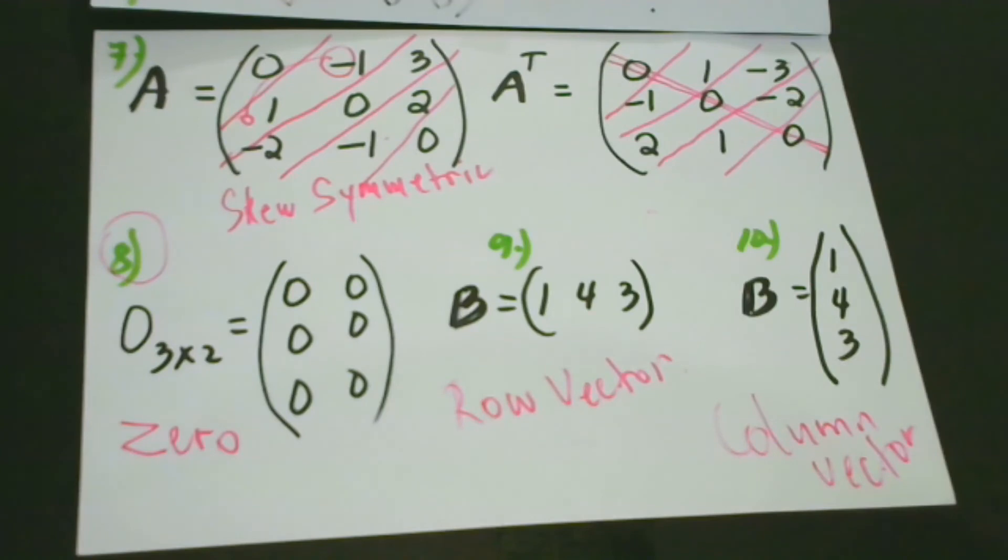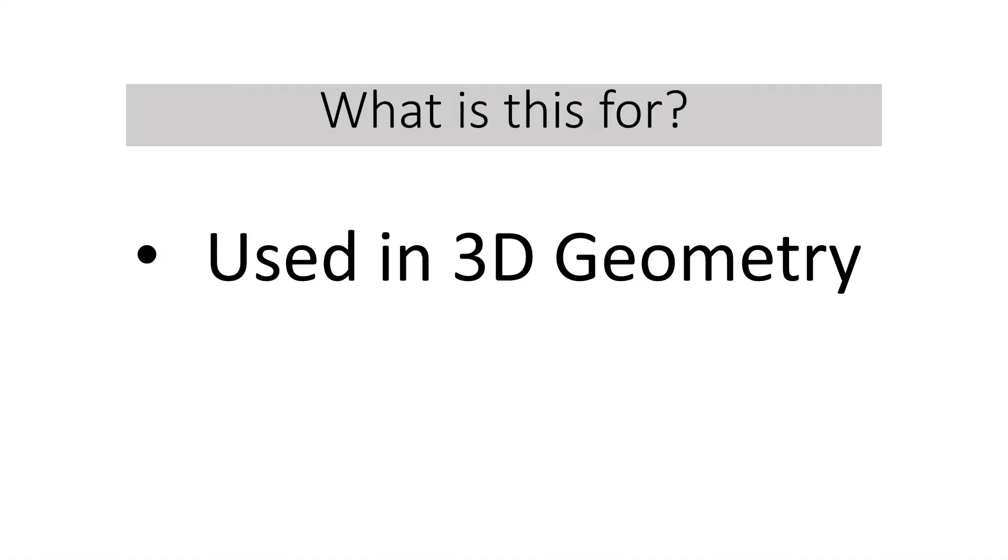What is this for? Why do we study this? Let's have some examples of the application of matrices. Some matrices are often used in 3D geometry, which is important in computer graphics. For example, a four by four matrix can represent a lot of transformations at once, like translation, rotation, scaling, and perspective or orthogonal projection.